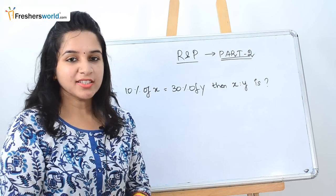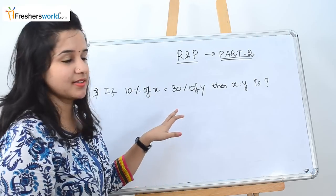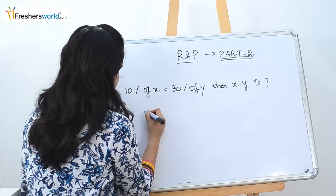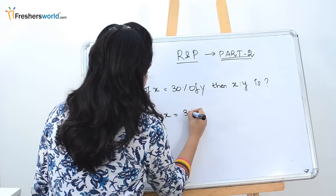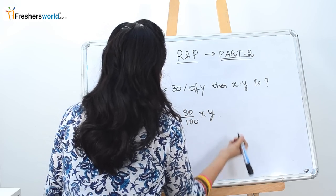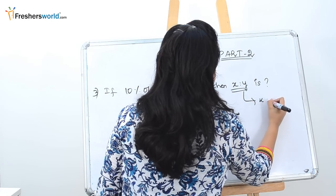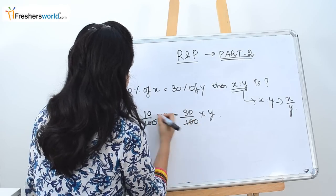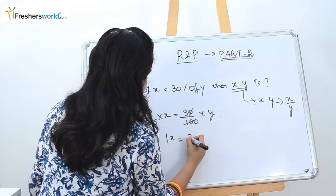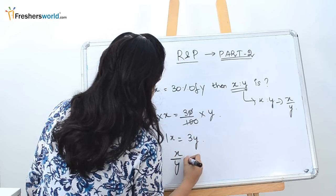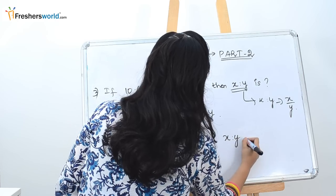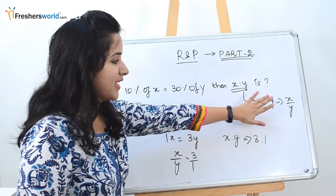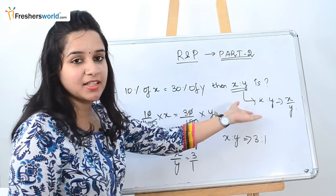The next question is: if 10% of x is equal to 30% of y, then what is x:y? From 10% of x = 30% of y, we get x/10 = 3y/10, simplifying to x = 3y, so x/y = 3/1. Therefore x:y = 3:1. Remember, x:y is the same as the fraction x/y, so once you find that fraction you have the ratio.